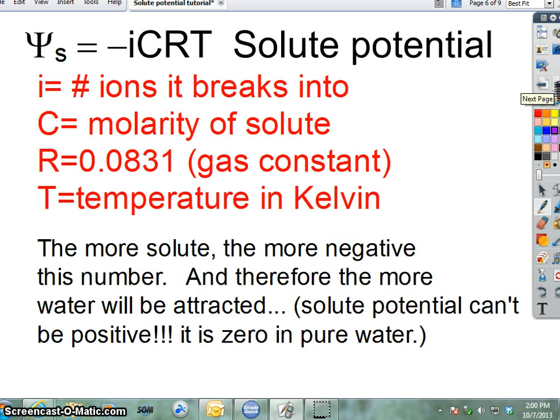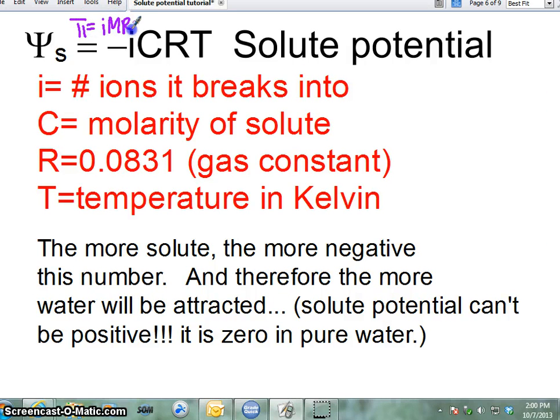Okay, if you're still with me, hopefully you'll be with me through this very last part. And if you had AP Chem, because I know some of you did, that you should recognize a formula almost like this that was pi is equal to IMRT. I think it was osmotic potential. This is a little different because this is solute potential. In other words, that's why it's negative, because you're looking at the opposite, not the water, but the solute. But it works the same way.